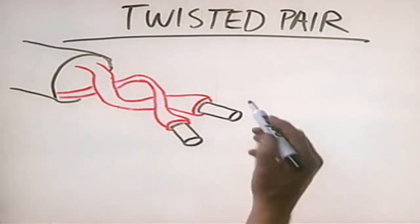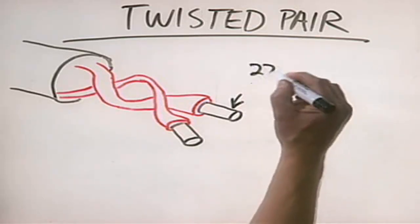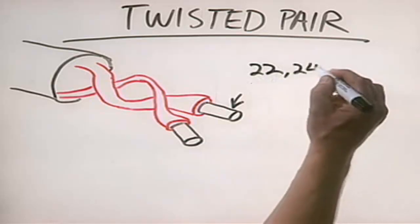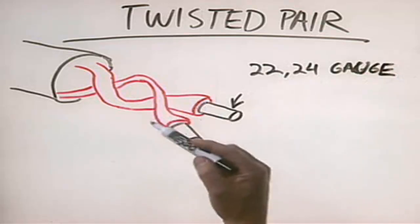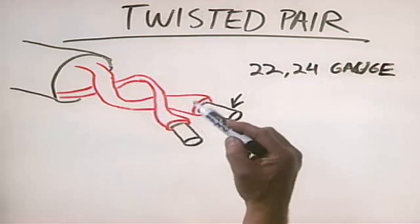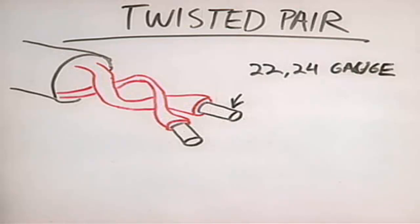This twisted pair wiring is composed of an inner conductor made out of copper, usually 22 or 24 gauge. These two copper wires with their plastic sheaths are twisted around each other for a very specific purpose. Whenever a current passes through copper wire, an electromagnetic field is created around the wire — we call it electromagnetic interference, EMI, or sometimes simply crosstalk.